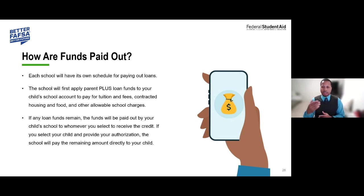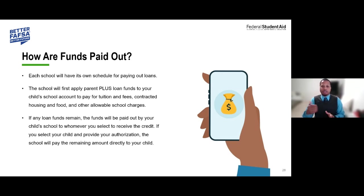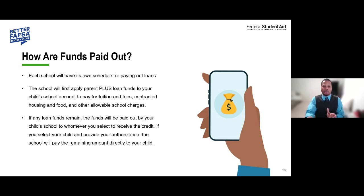Different schools have different schedules for paying out loans — some pay within the first week of enrollment, others may take a couple of weeks or disburse further into the semester. Funds are first applied to the bill; any overages are considered a refund and generated at that point. Communicate with the financial aid office to determine the specific timelines for when funds are disbursed at your school.